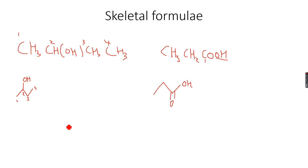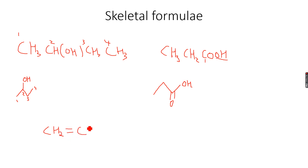We have done skeletal formulas of these compounds — it's actually very easy to do. Now if you have an alkene, let's do an alkene because we haven't practiced that. The structural formula for ethene is CH2=CH2. We will have to show the double bond.